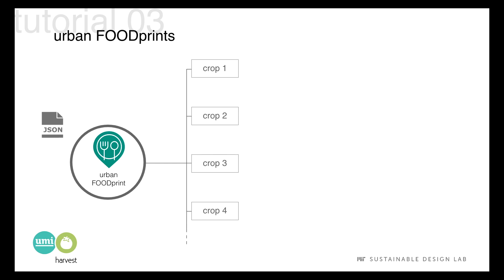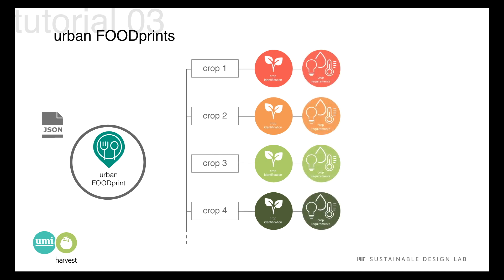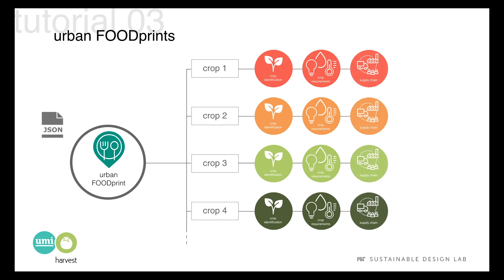The urban food print file consists of a list of crops, and for each crop three types of data entries have to be provided: crop identification, crop growth requirements, and supply chain information.